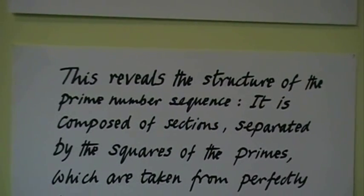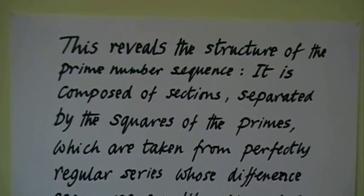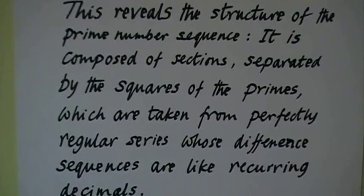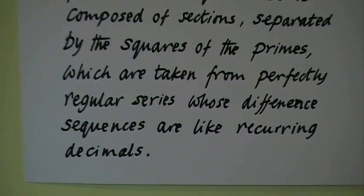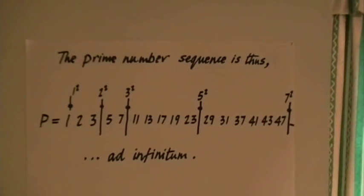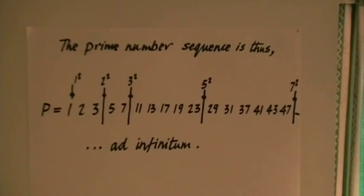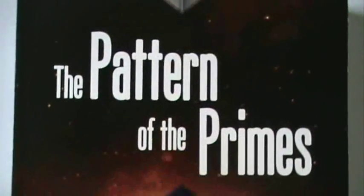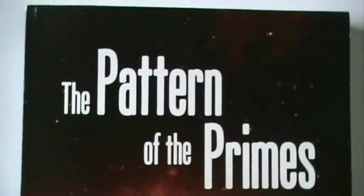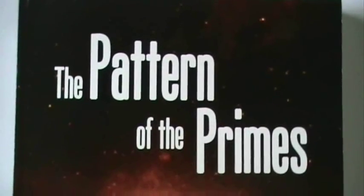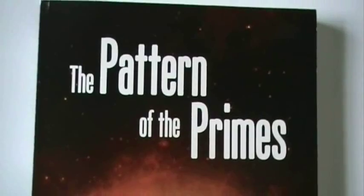It's worth repeating that the prime number sequence is composed of sections separated by the squares of the primes, and each section is taken from a perfectly regular sequence. I hope I've carried you with me, and thank you for listening. If you want to learn any more about these things, then have a look at 'The Pattern of the Primes' — a book-length treatment of it and more besides.